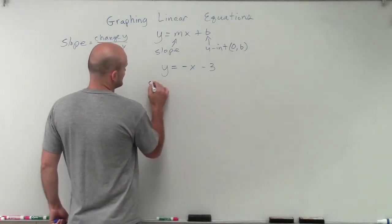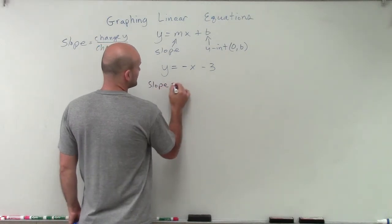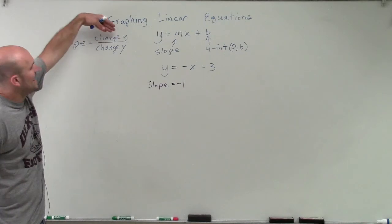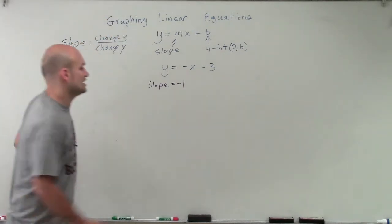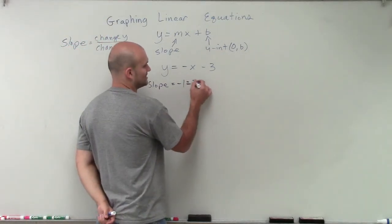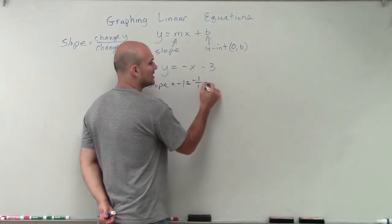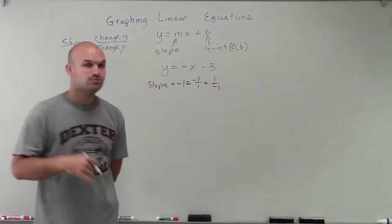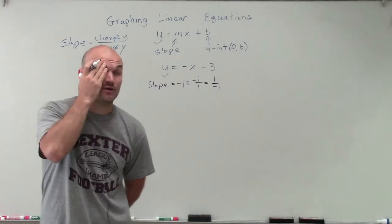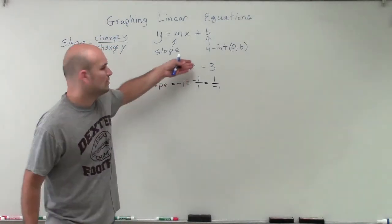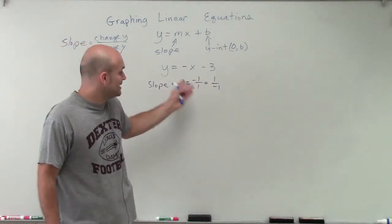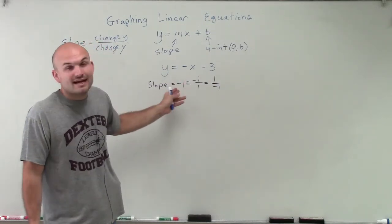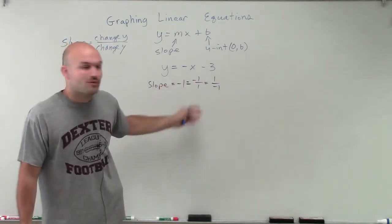In this case, our slope is going to equal negative 1. However, we always want to write our slope as a fraction in change of y over change of x. So I'm going to write this as negative 1 over 1. But I could also write this as 1 over negative 1. I'll show you why it does not matter which way we write it — with the negative on top or on the bottom. If you plug this into your calculator and check, you're still going to get negative 1.